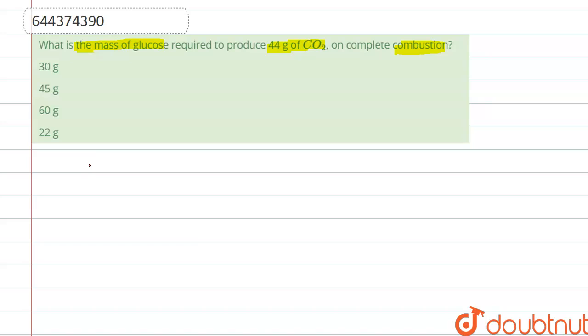That is glucose, which is C6H12O6, on combustion produces CO2 and H2O. So we have to balance it, so here it is six, six, and six.